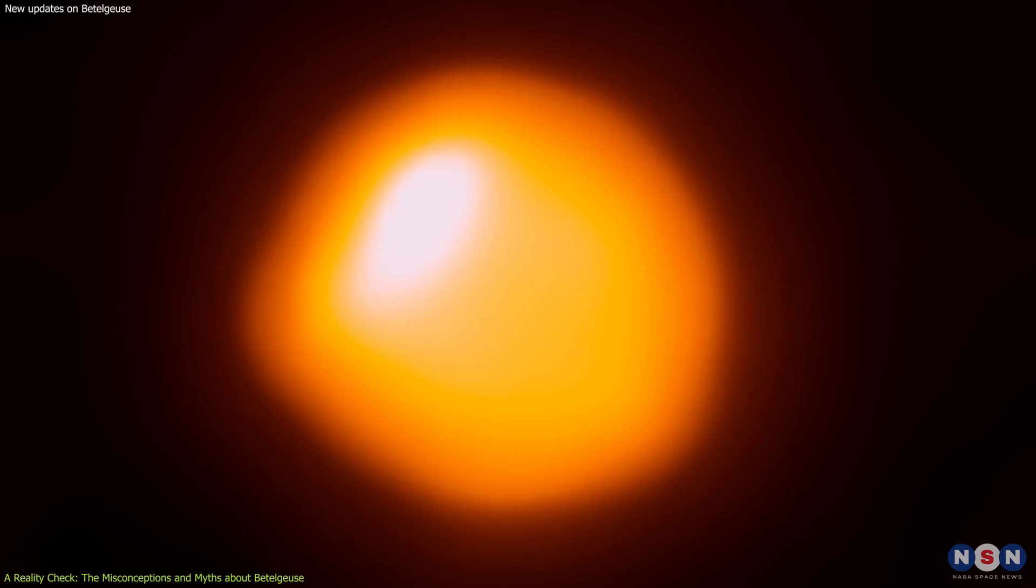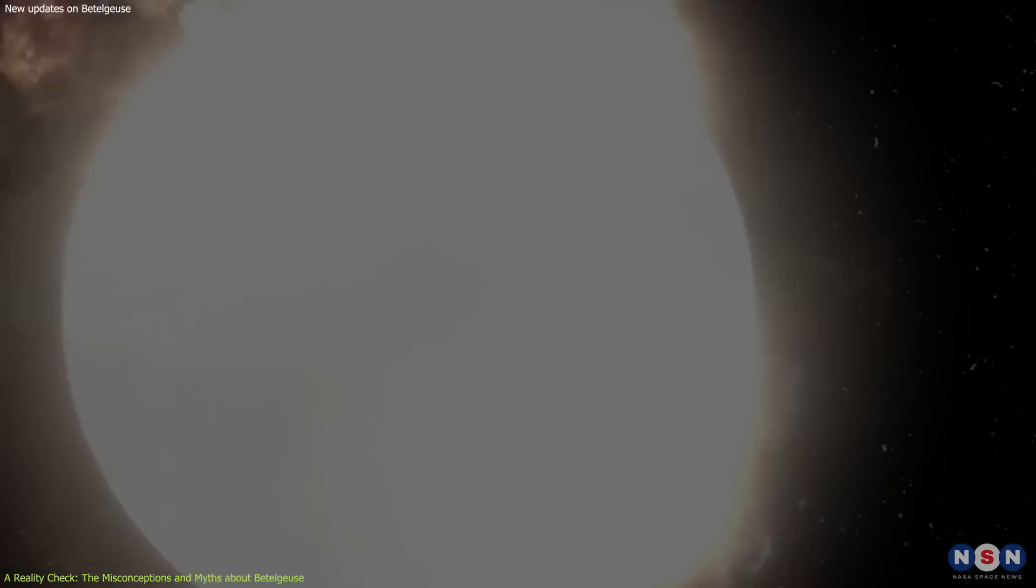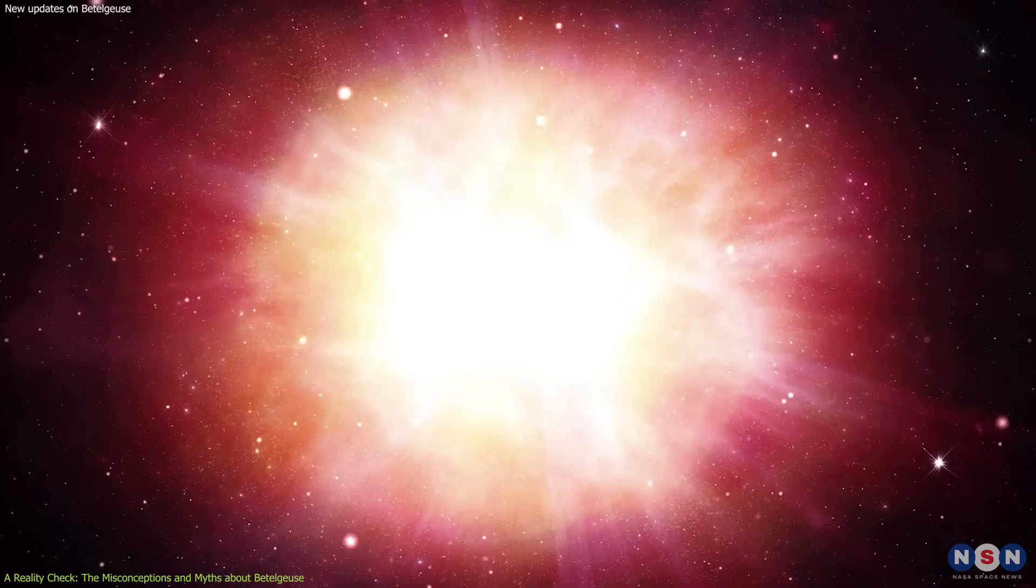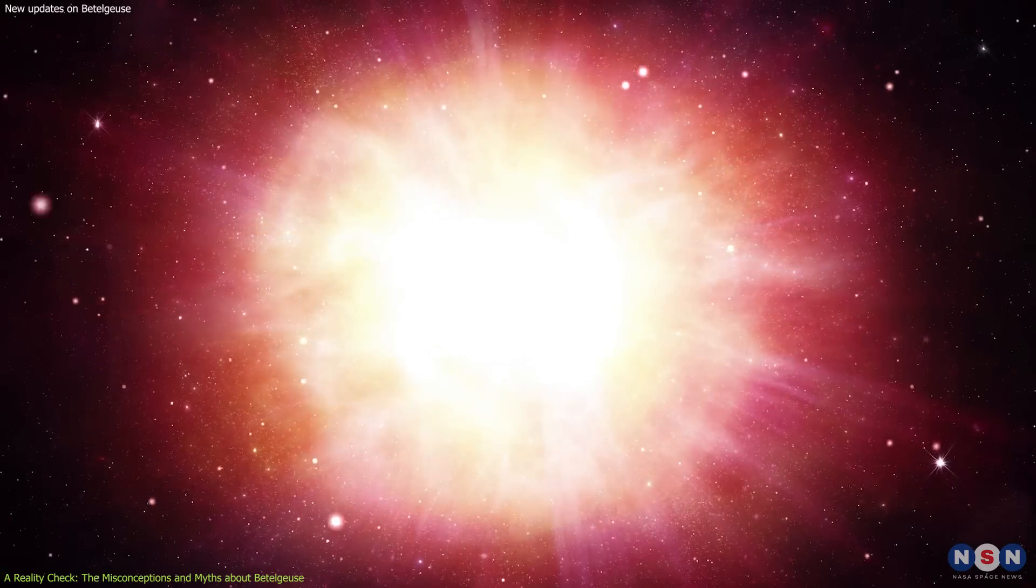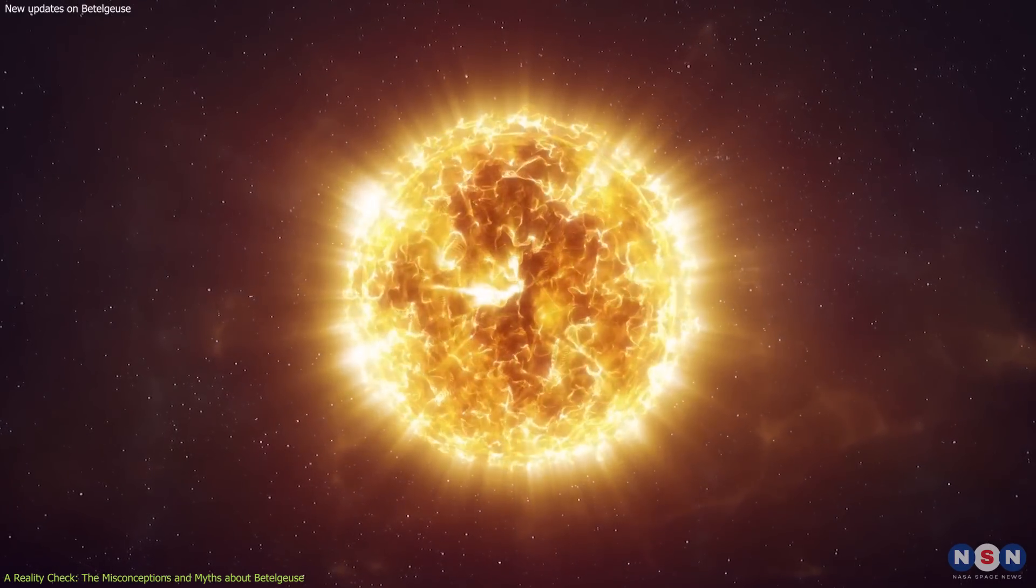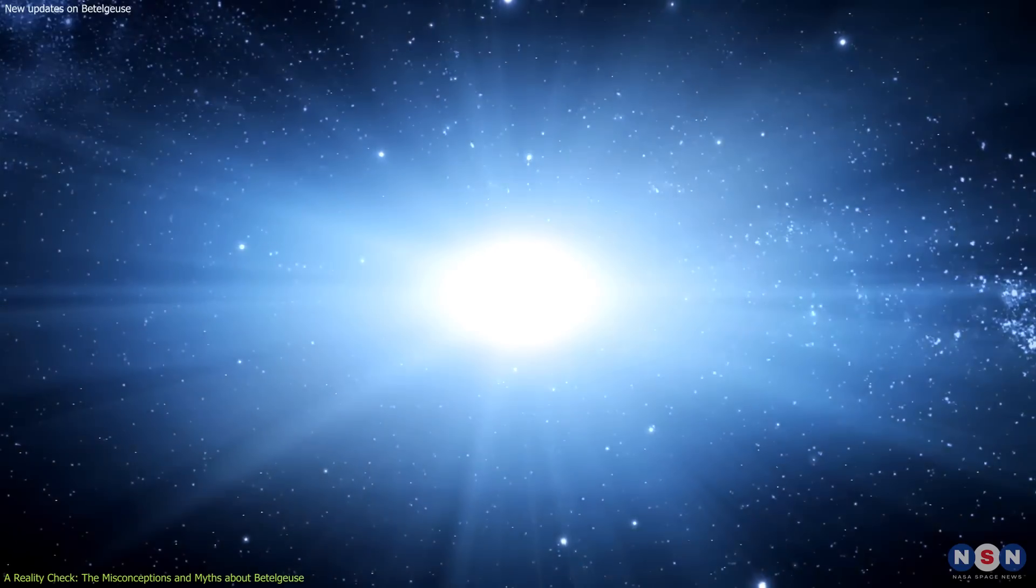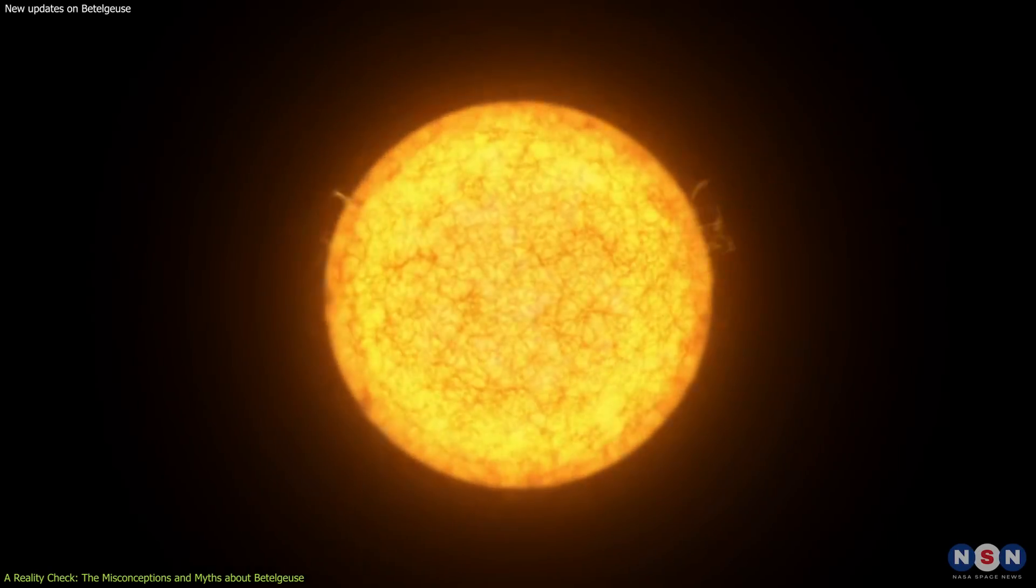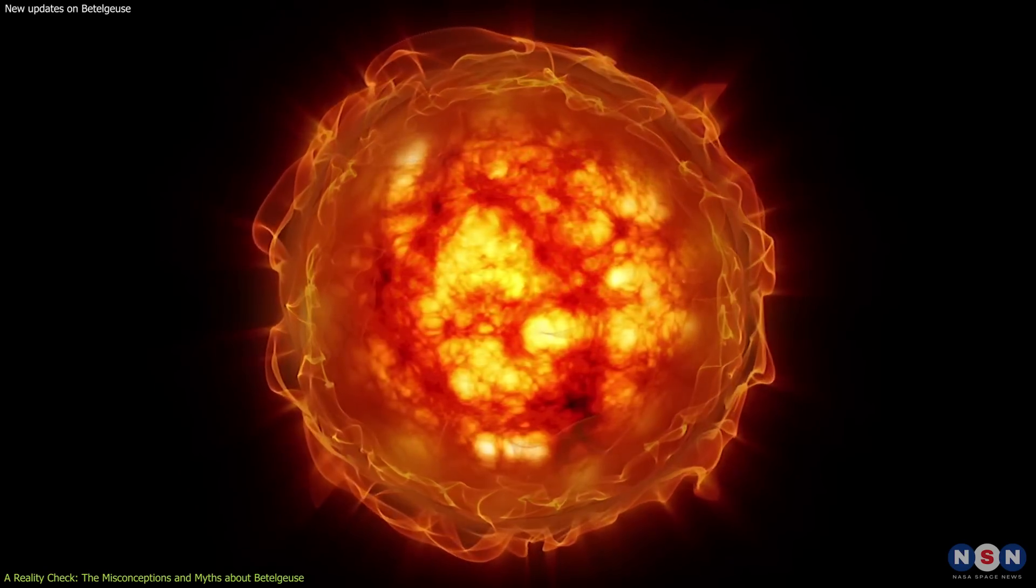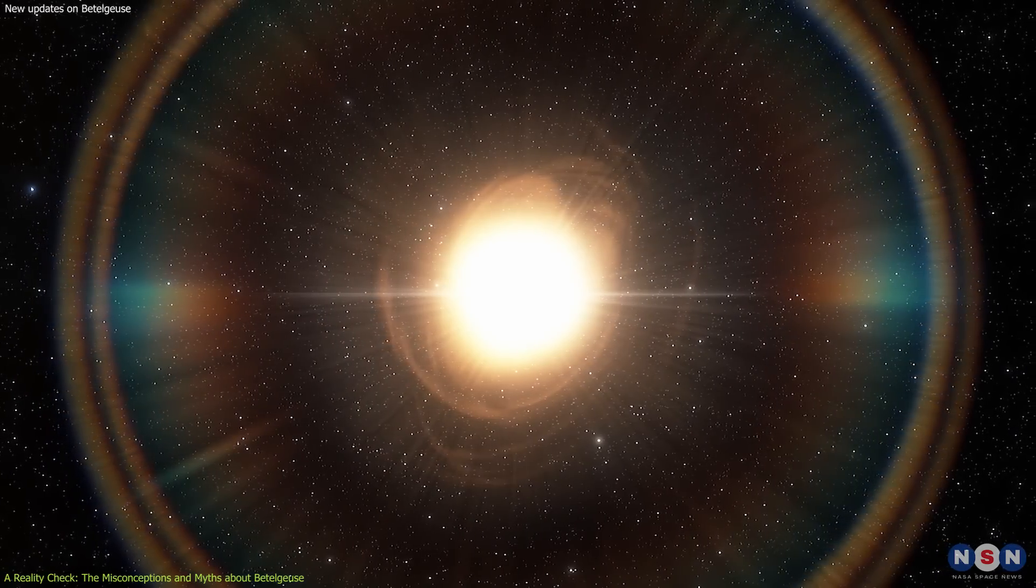The star still has thousands or millions of years left before it exhausts its nuclear fuel and implodes. The exact timing of its demise is uncertain, as it depends on many factors that are hard to measure or predict, such as its mass, rotation, composition, and internal structure. The dimming event of 2021 was not a sign of its imminent demise, but rather a normal cycle of variability that has nothing to do with its core. In fact, Betelgeuse has already recovered from its dimming event and is now back to its normal brightness.